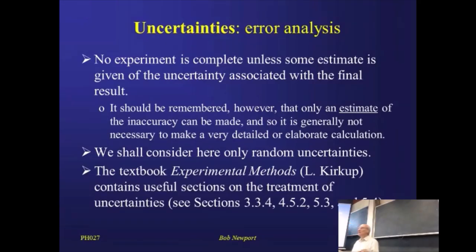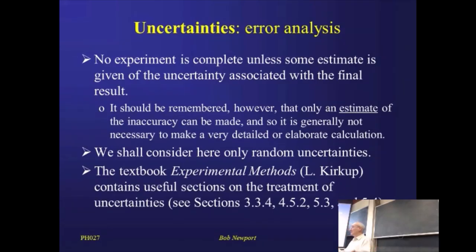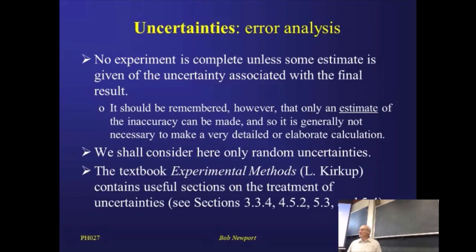A systematic error would be if the manufacturer of this ruler had got it wrong — so if this wasn't a one-metre ruler, but was actually stretched by 2%, it was actually 102 centimetres long instead of 100 centimetres long. Then everybody's measurement will be wrong because of that systematic error. You would have no chance of making an accurate measurement because your measuring device is wrong in some sense.